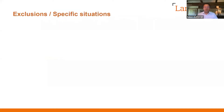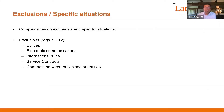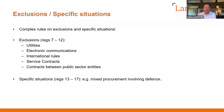In terms of exclusions and specific situations, the rules are complex. Looking at regulations 7 to 12 of the PCRs, we're talking about utilities, electronic communications, international rules, service contracts and contracts between public sector entities. Specific situations are set out in regulations 13 through 17 — for example, mixed procurement involving defence. And if you look at Regulation 32, there you have rules on when the procedures don't have to be followed.